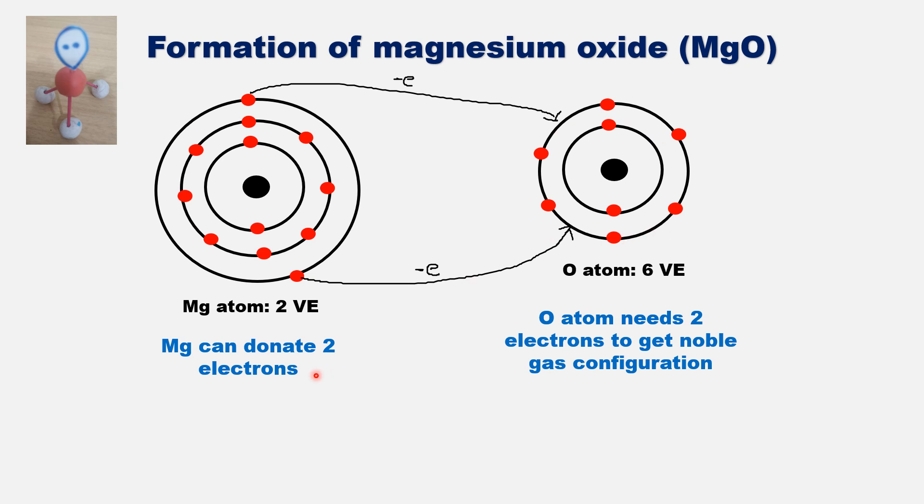Now let's see what happens when magnesium donates two electrons to oxygen atom.